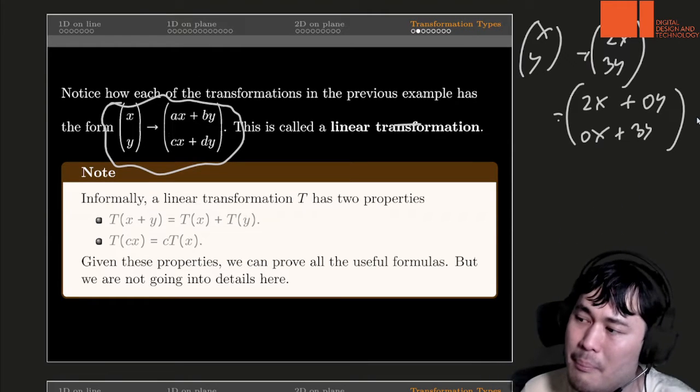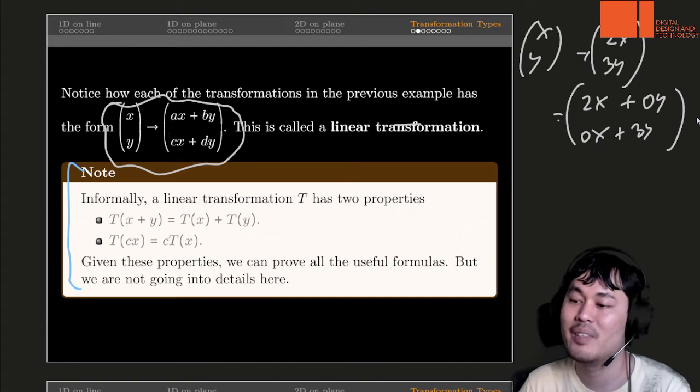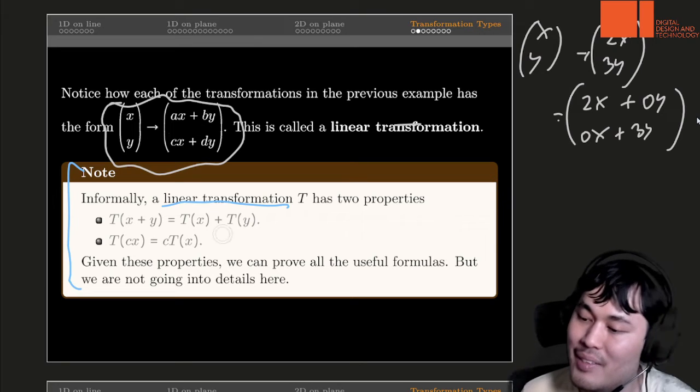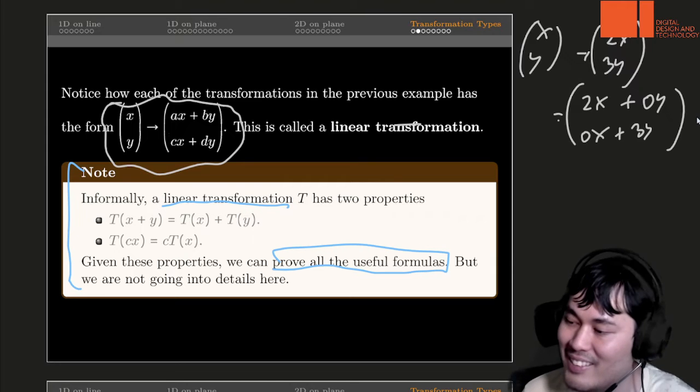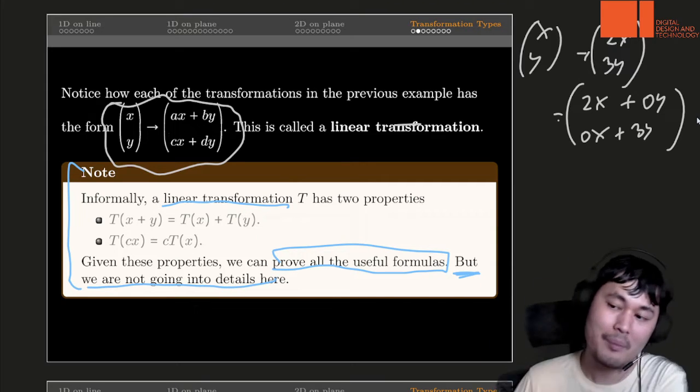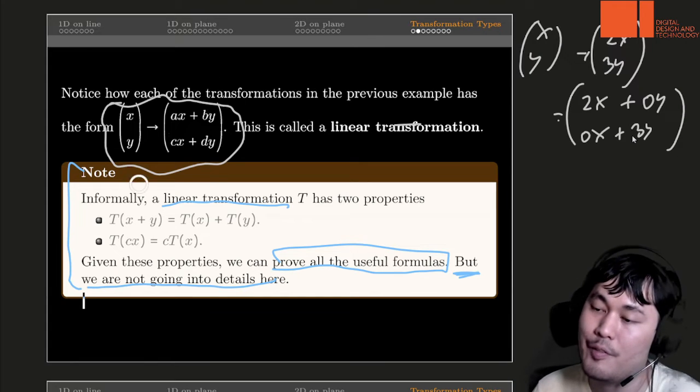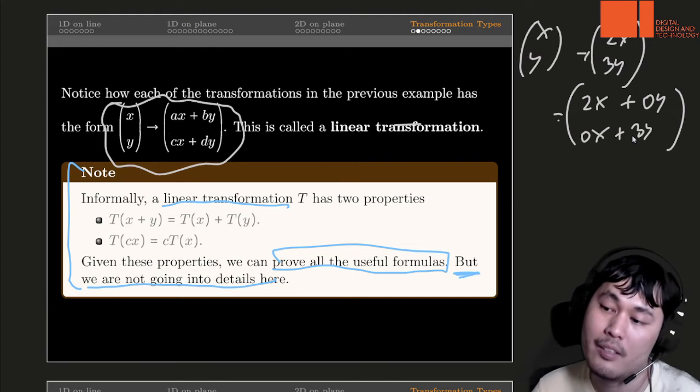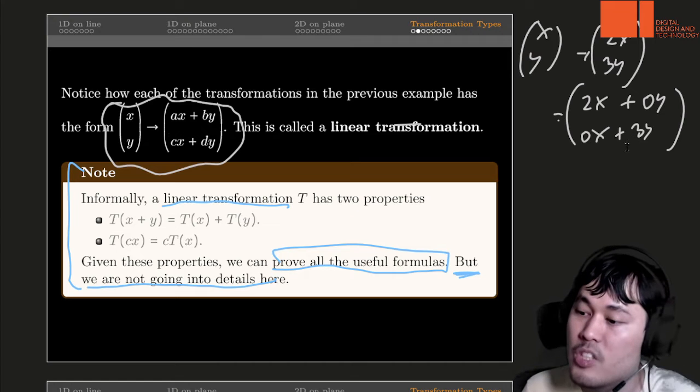There is a mathematical property like what the actual linear transformation is, like how we use this form, how we define. But if you know that one, we can prove all the useful formulas. But we are not going into details here. That's too sophisticated. Just focus on the fact that if you transform it or shear it using this kind of formula, then it should be linear.